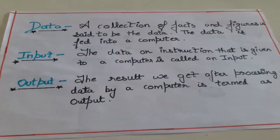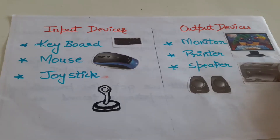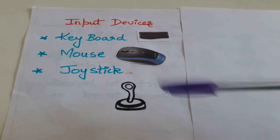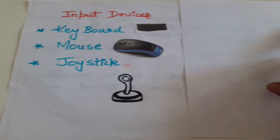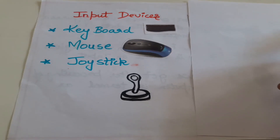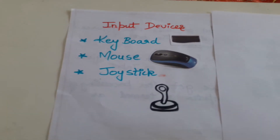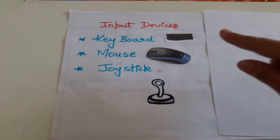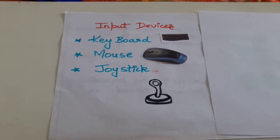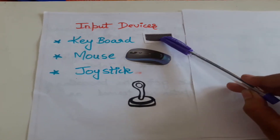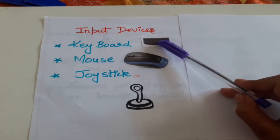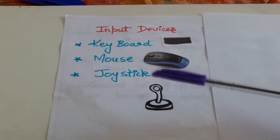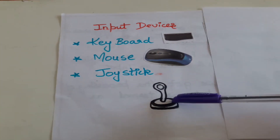Now can you see children — input devices and output devices. Input devices are those devices that help us to feed the data into the computer. Through these input devices we can enter the data. Like keyboard — keyboard also helps us to enter the data, we can do the typing through keyboard. Mouse also helps us to enter the data. And then there is joystick. This is joystick.